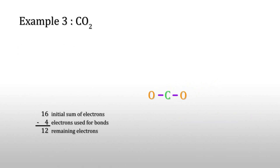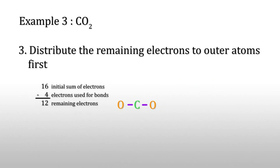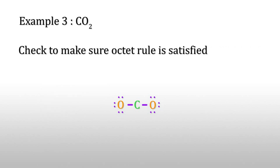Distribute the remaining twelve electrons to the outer atoms. Now check to make sure the octet rule is satisfied. Oxygen is satisfied — this oxygen satisfied, and this oxygen also satisfied.